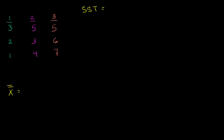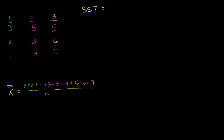The grand mean is going to be 3 plus 2 plus 1, plus 5 plus 3 plus 4, plus 5 plus 6 plus 7, and then we have 9 data points here, so we'll divide by 9.